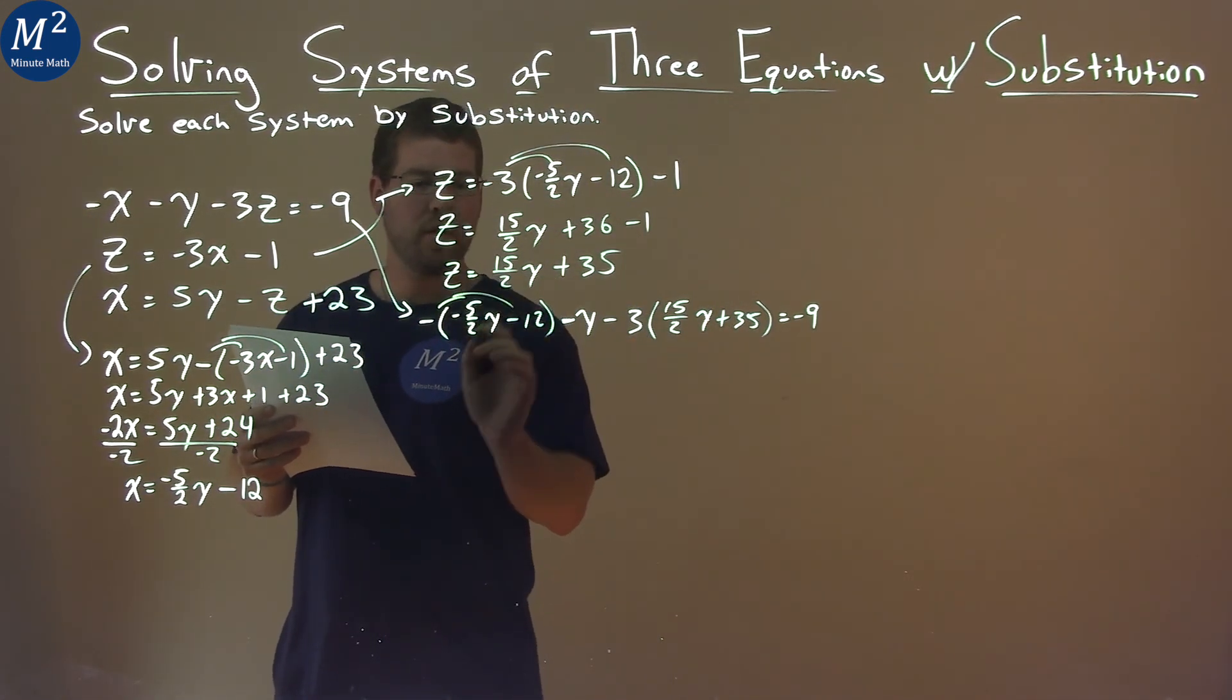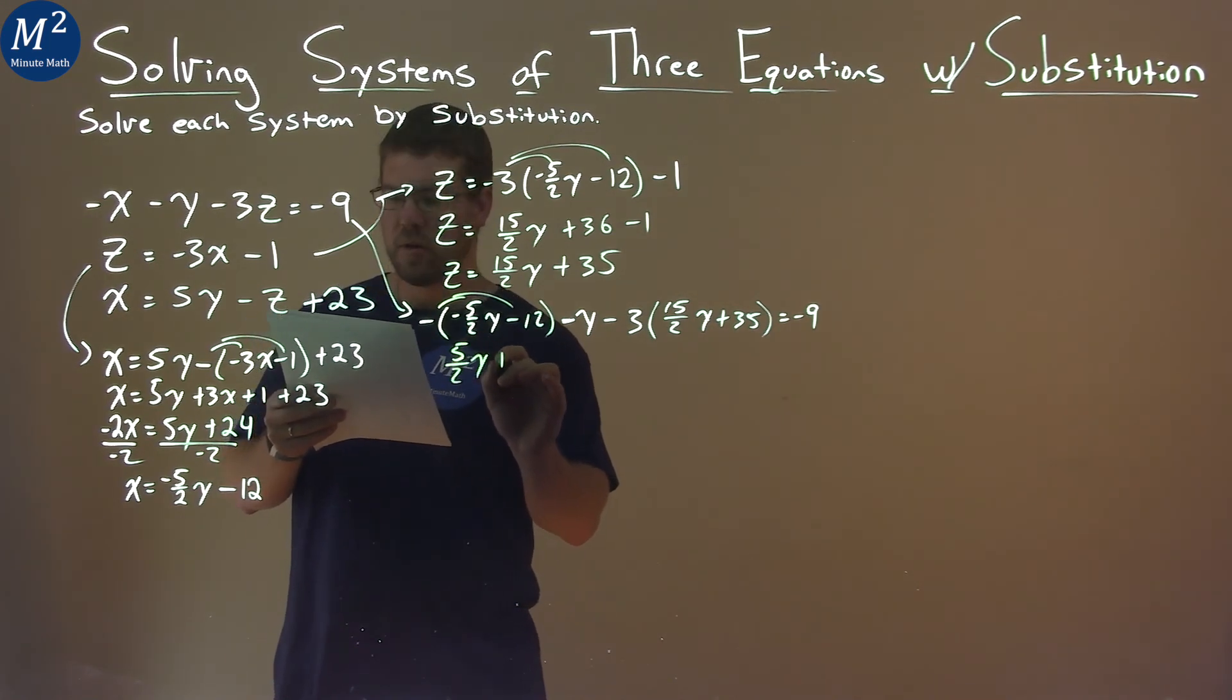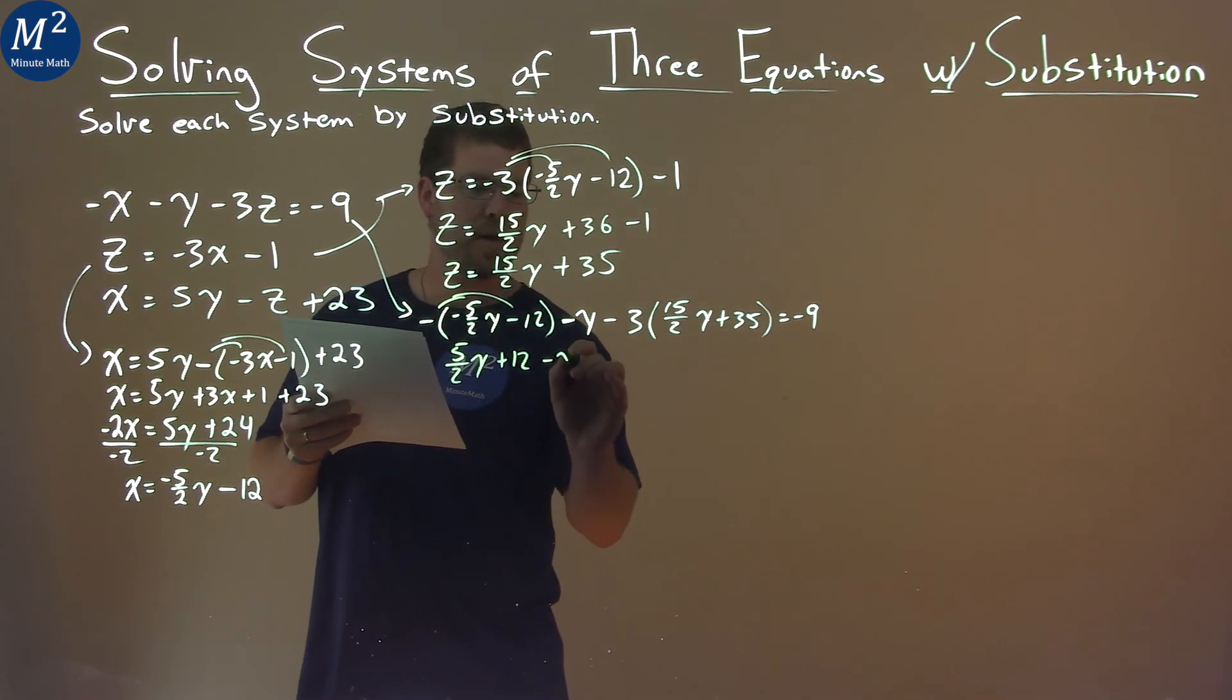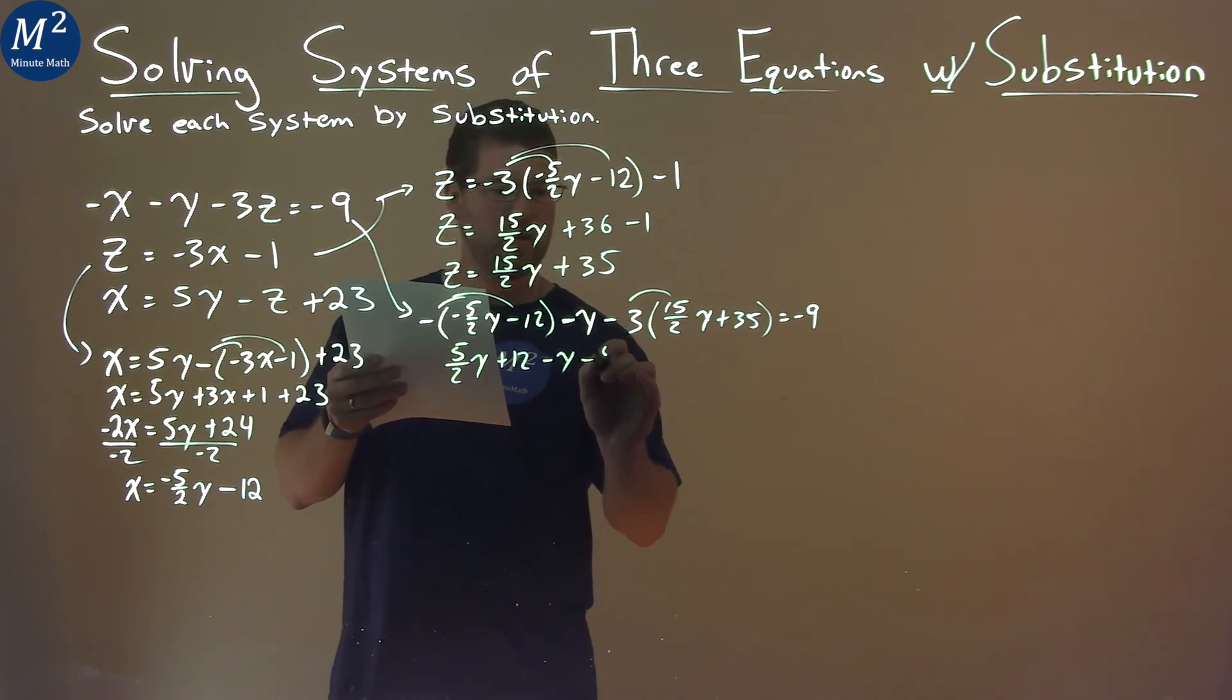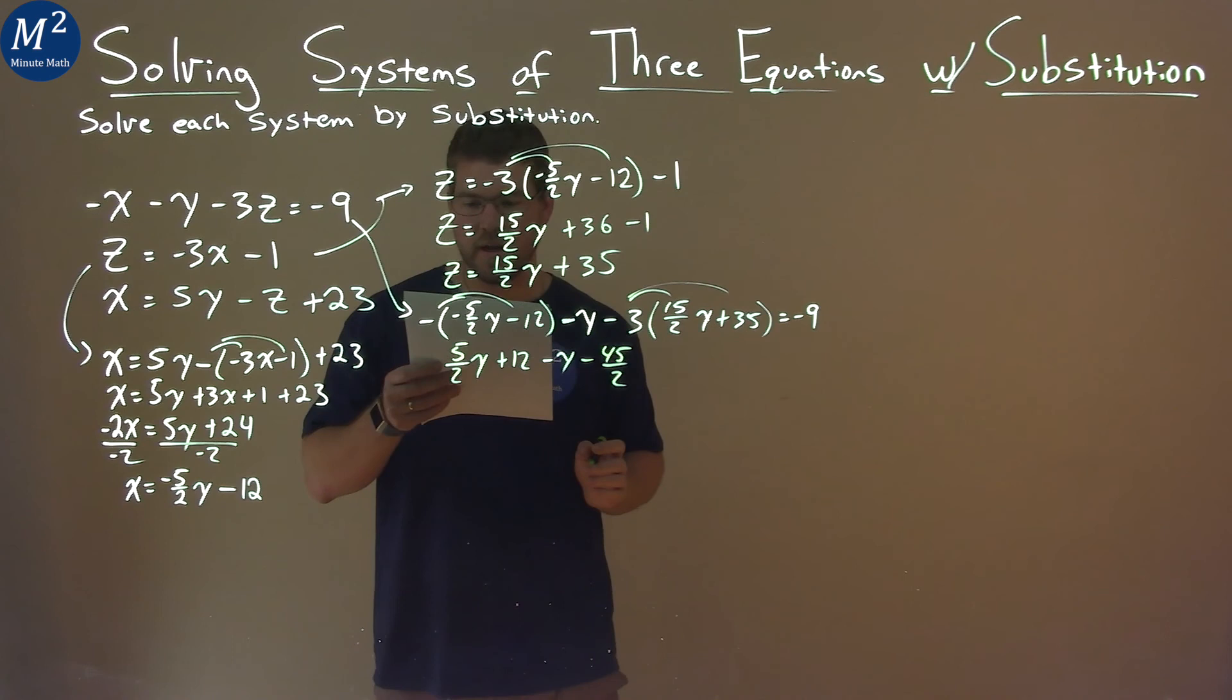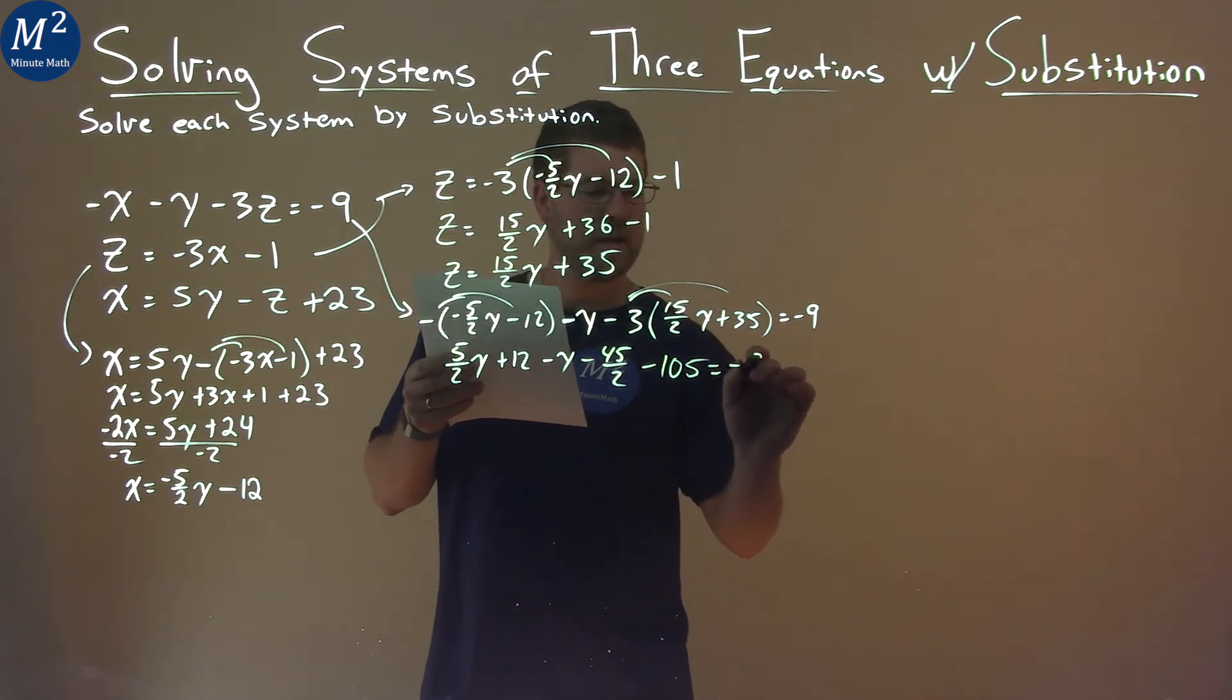Distribute the negative sign here to both parts, and we have positive 5 halves y plus 12. Then we have minus y here. Distribute the 3 times the 15 halves, and we have minus 45 halves y. Don't forget to distribute the minus sign. Distribute the minus sign again. Negative 3 times 35 is negative 105, and that equals negative 9.